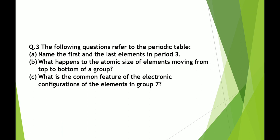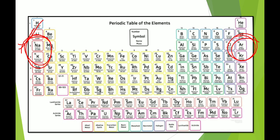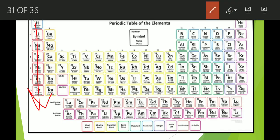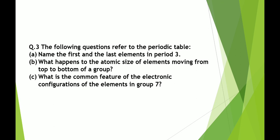Next question: what happens to the atomic size of elements moving from top to bottom of a group? When we move down a group, the atomic size of elements increases. Next question: what is the common feature of the electronic configurations of the elements in group 7? The group number signifies the number of electrons present in the valence shell. So all elements in group 7 will contain 7 electrons in their valence shell.